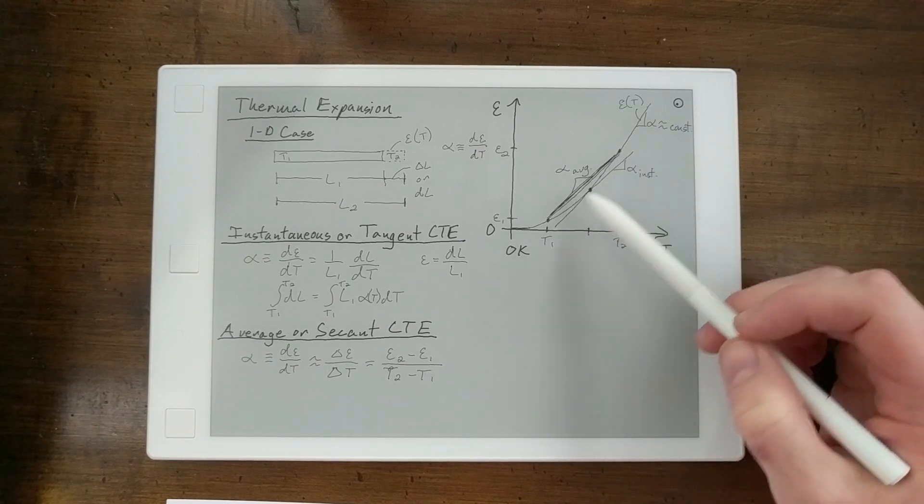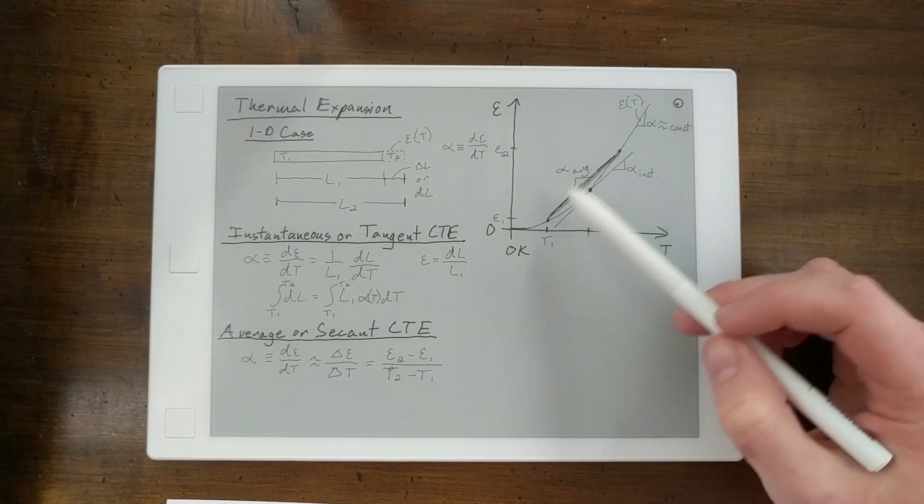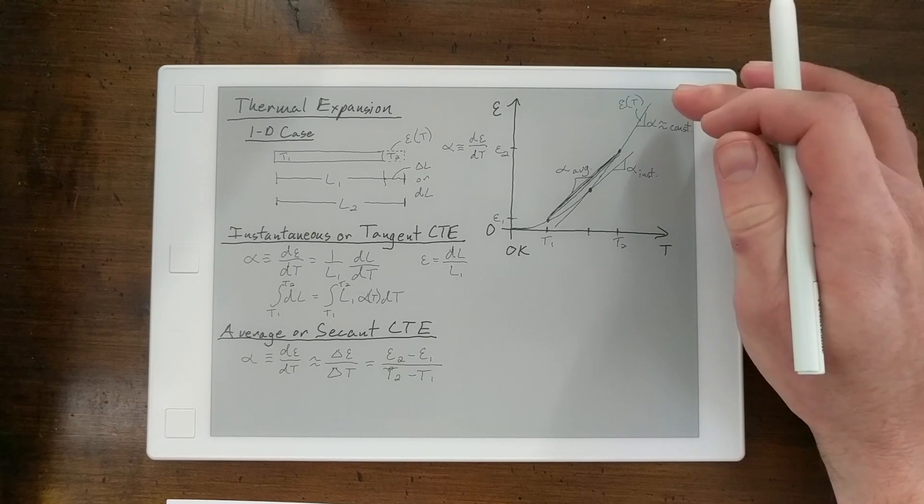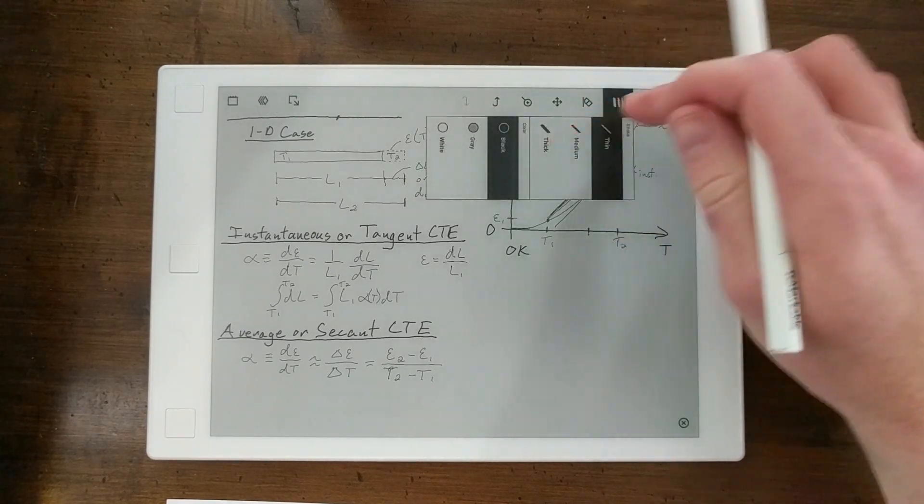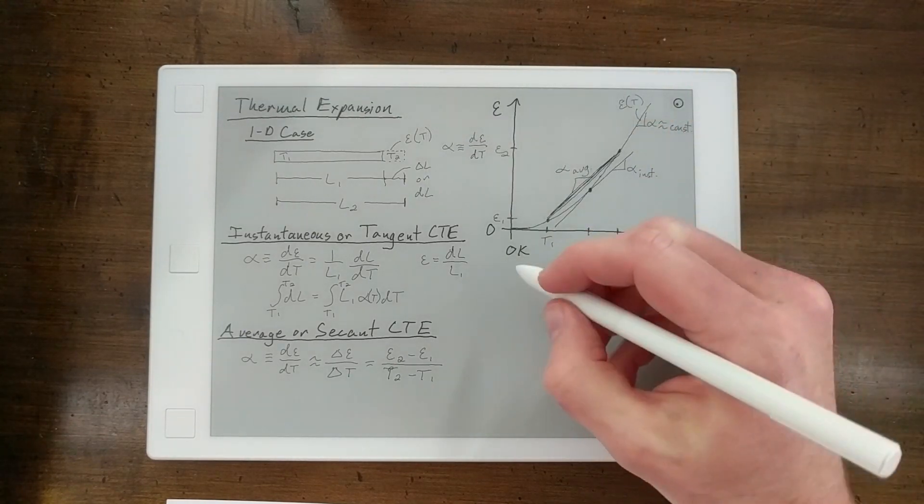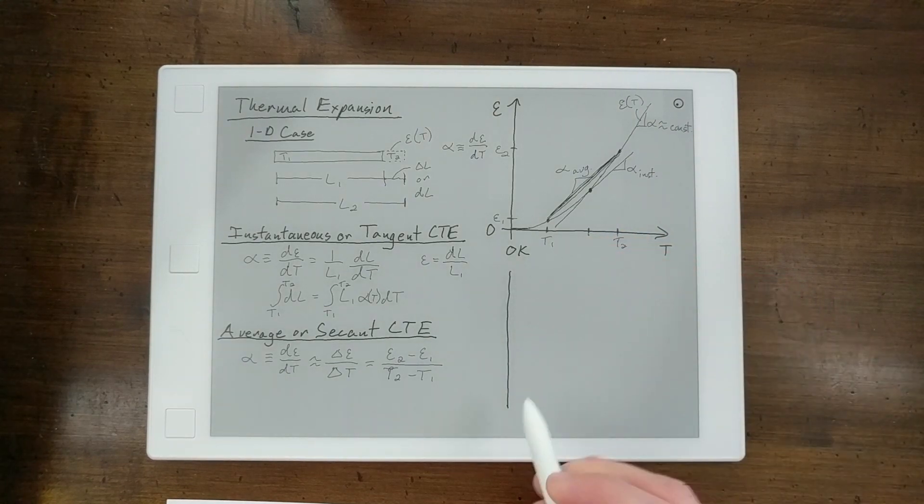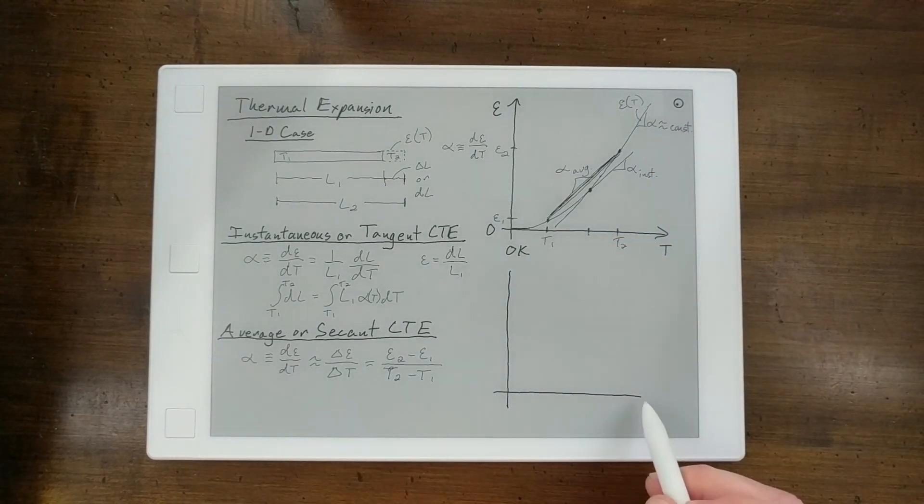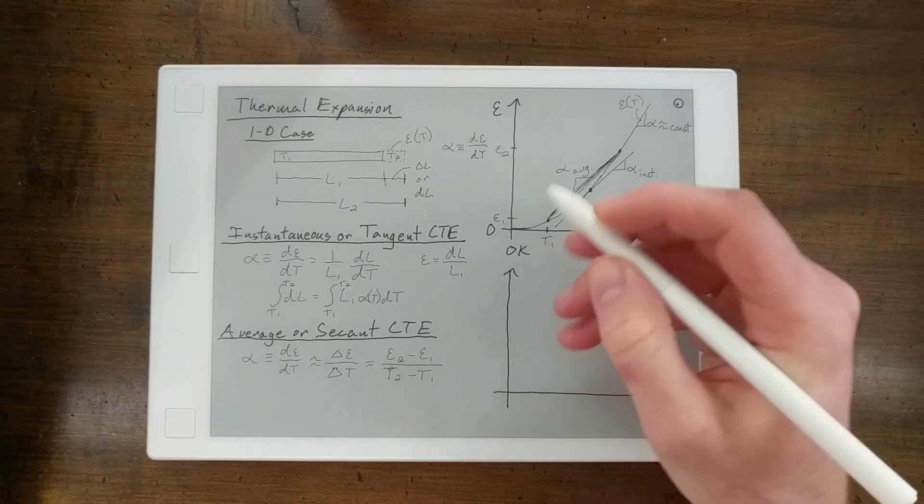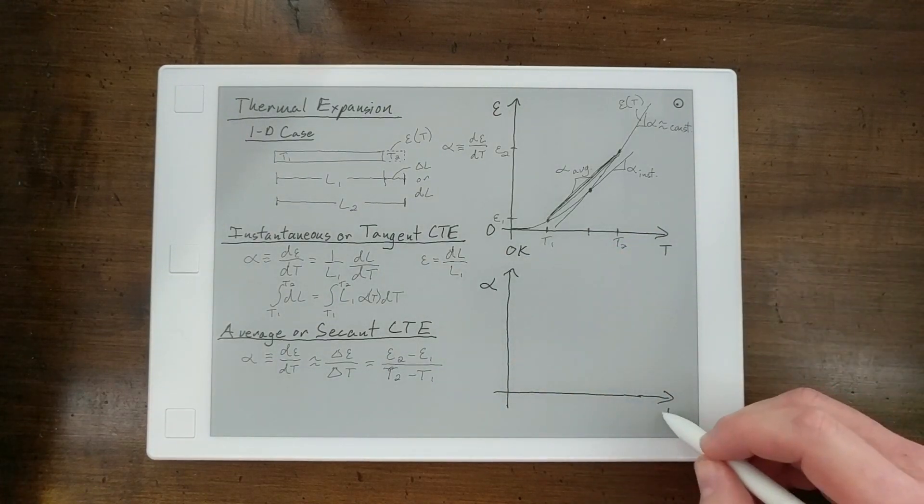But down here in this transition region, it's going to be a very different story. So, we can further illustrate that by looking at the thermal expansion coefficient, alpha versus temperature.